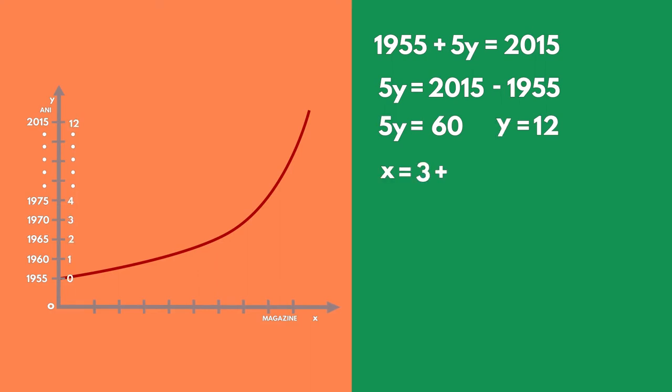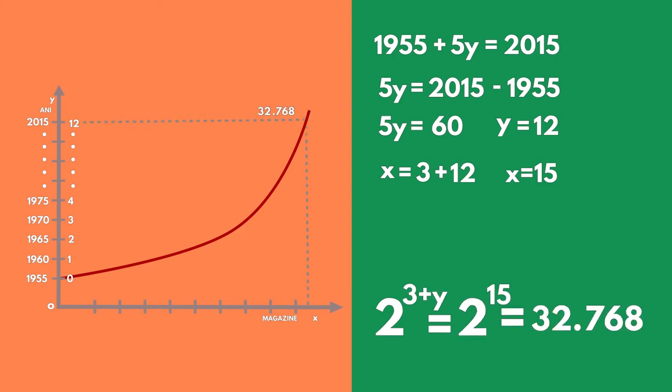This actually means that there were 12 growth periods in this time. If we know y, we can find x. Thus, we'll be equal to the number of stores.